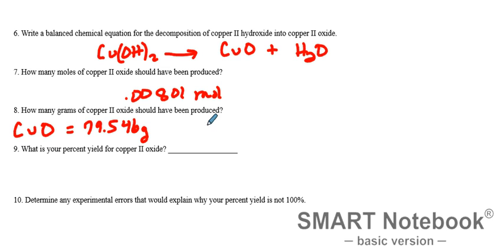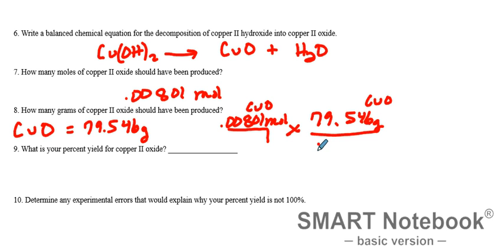So how many grams are supposed to be produced? We have the moles, and it's a one-step problem. So 0.00801 moles of copper oxide multiplied by its molar mass of 79.546 grams of CuO over one mole of CuO, and that will give us the grams of copper oxide.